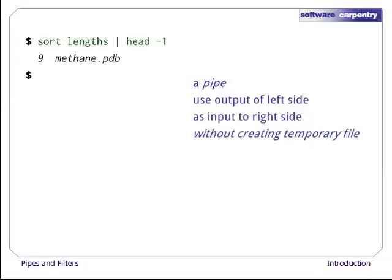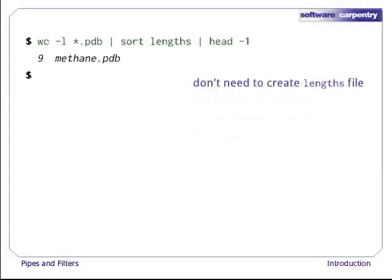The computer can create such a file itself if it wants to, or run the two programs simultaneously and pass data from one to the other through memory without ever putting it on disk. We don't have to know or care. If we don't need to create a temporary file sorted_lengths, can we get rid of the lengths file too? The answer is yes. We can use another pipe to send the output of wc directly to sort, which then sends its output to head. This is exactly like a mathematician nesting functions — the calculation is head of sort of word count of *.pdb.